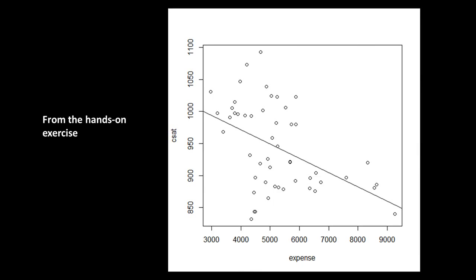To recap the hands-on exercise: we had a file with average SAT scores of some school districts and information about the amount of money each school district was spending on primary and secondary education. What we found is a negative relationship between expense and the median SAT score — which we would not have expected — and by looking at the scatter plot we see this negative trend is not very strong.